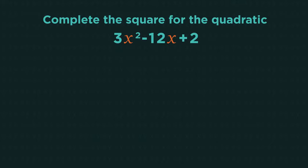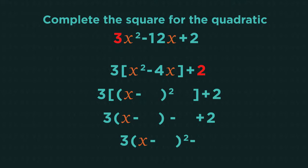So let's have a quick look at what happens when the coefficient of x squared isn't one. I'll get you started and then you can finish it off. So start by factoring three out of the 3x squared and the negative 12x to give us x squared on its own. Leave the two alone. Now you can complete the square.